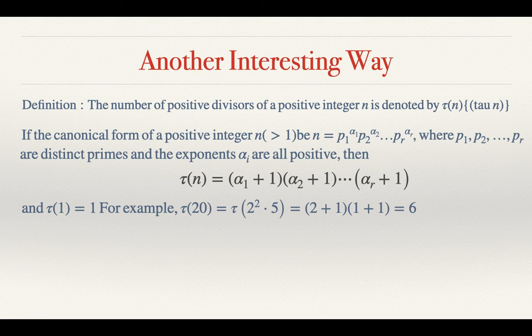We must remember that tau of 1 is 1. Now this definition and the canonical forms look very complex at first sight, but it is very easy when we look at an example.